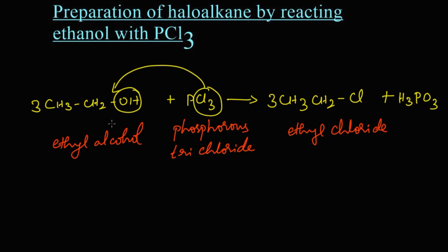Let's summarize the reaction. When ethyl alcohol reacts with phosphorus trichloride, we get ethyl chloride or chloroethane as the product along with phosphorous acid. Thank you.